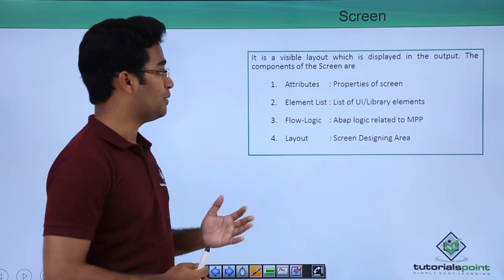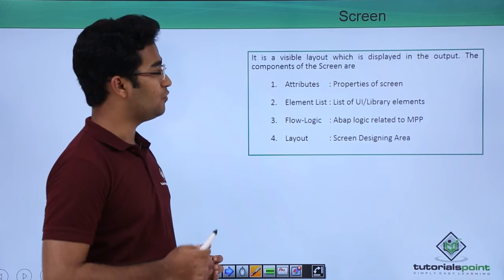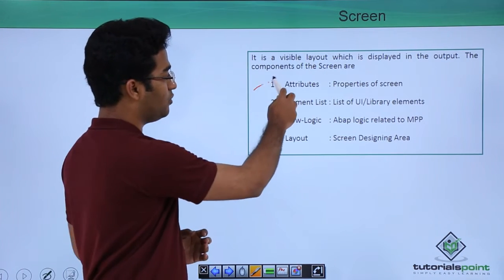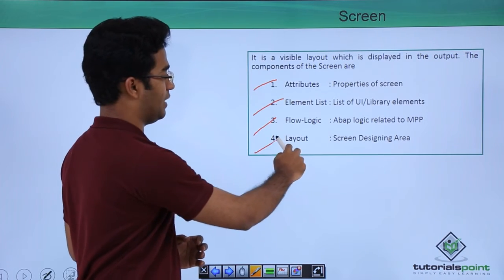Now, let us see the screen in MPP that is it is a visible layout which is displayed in the output. The components of a screen are attributes, element list, flow logics and layout.